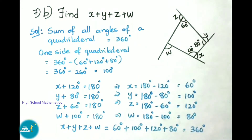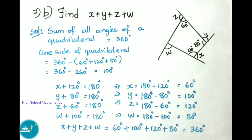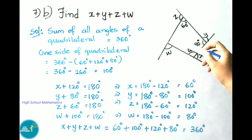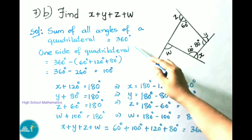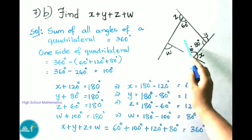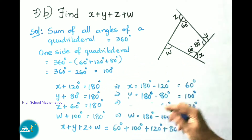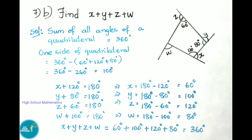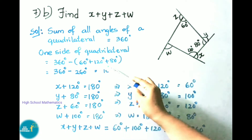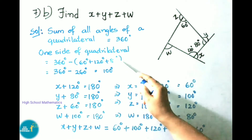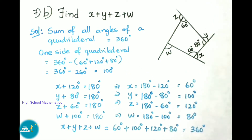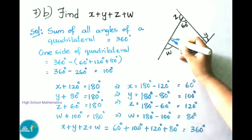See now seventh question B: find x + y + z + w. Observe the given figure — it has four sides, so it is a quadrilateral. The sum of angles is 360 degrees. Three angles are given; the fourth = 360 - (60 + 80 + 120) = 360 - 260 = 100 degrees. Therefore the fourth interior angle is 100 degrees.